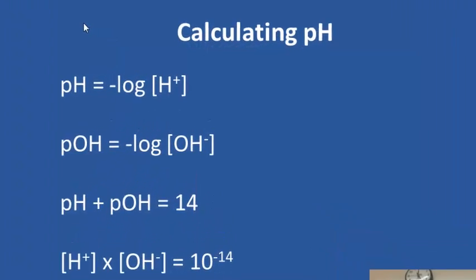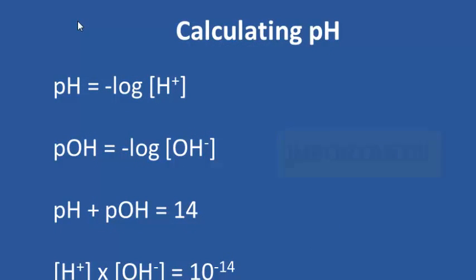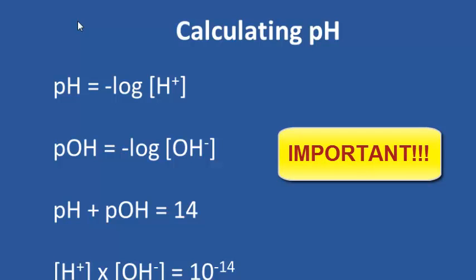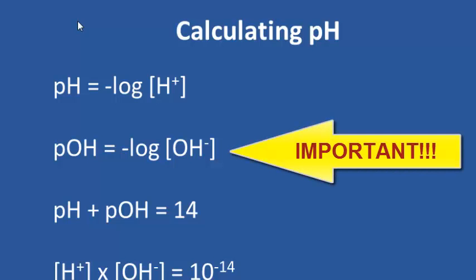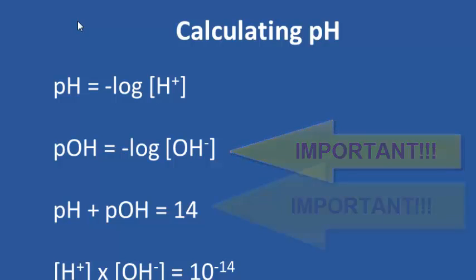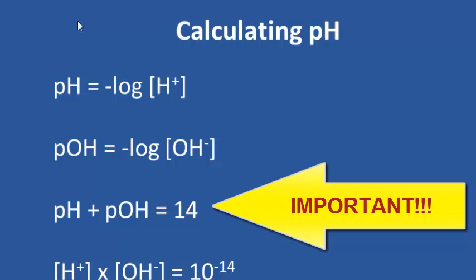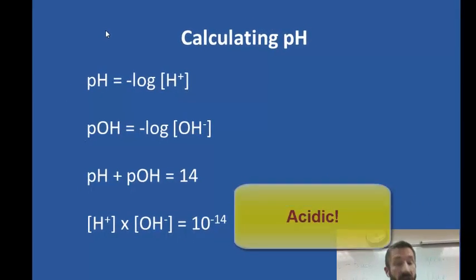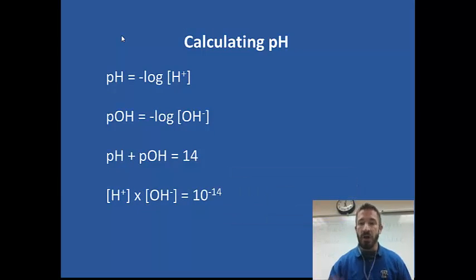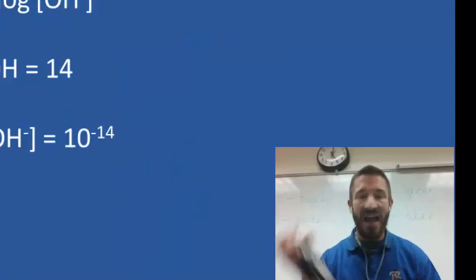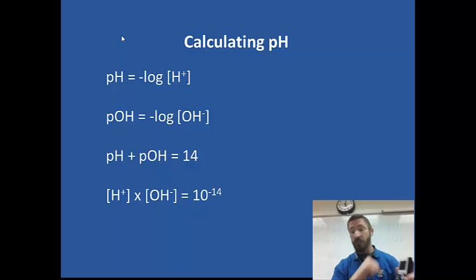We have four important formulas to write down. First: pH equals negative log of the proton concentration [H+]. Second: pOH equals negative log of the hydroxide concentration [OH−]. Third: pH plus pOH equals 14. Fourth: the proton concentration times the hydroxide concentration equals 10 to the minus 14. Make sure you can actually calculate each one on your calculator, not just write the numbers down, because the numbers could be switched when you see these in class.